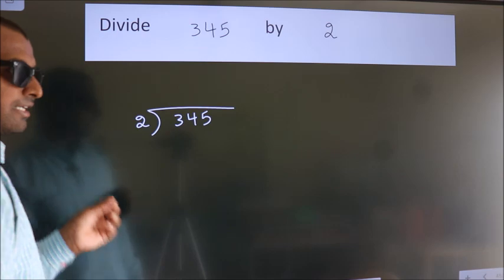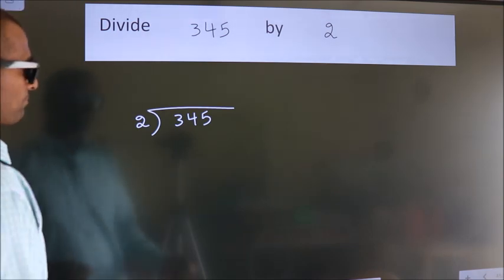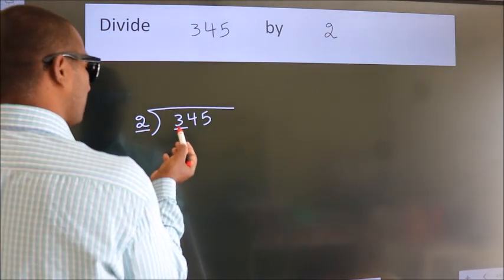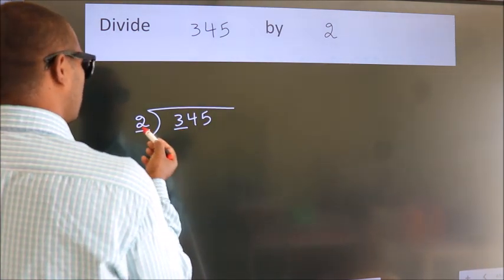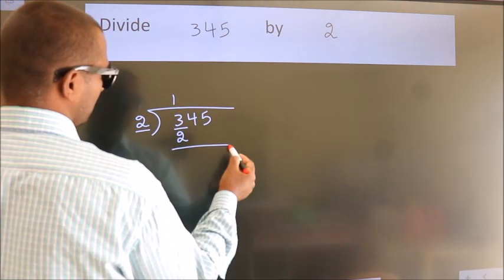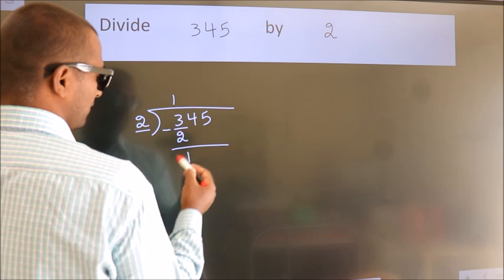This is your step 1. Next, here we have 3, here 2. A number close to 3 in 2 table is 2 1s, 2. Now we should subtract. We get 1.